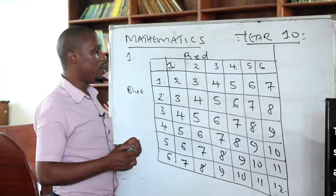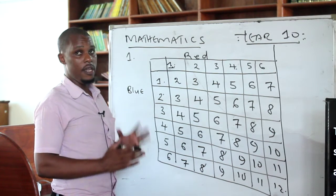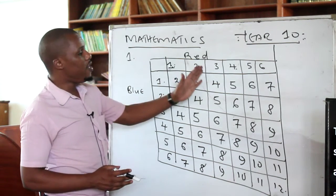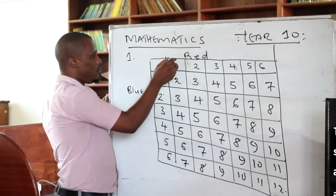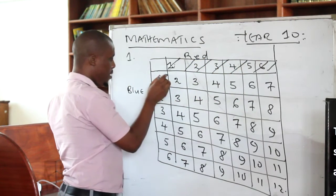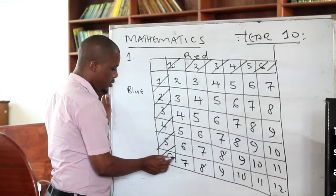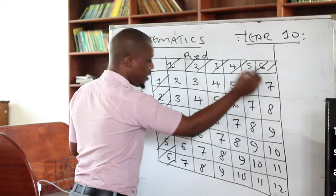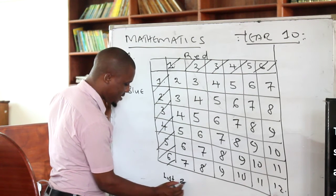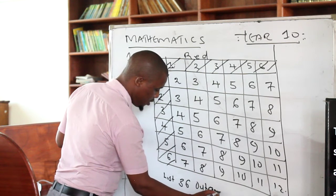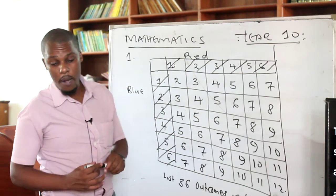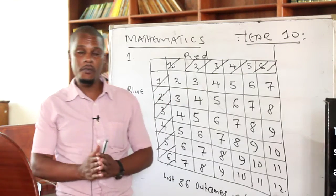That is how we fill the table. You can see that the table is assisting us to be able to come up with a list of all possible outcomes. From this table you can see how many outcomes you are going to have. The outcomes for the red die are 1, 2, 3, 4, 5, 6; and for the blue die also 1, 2, 3, 4, 5, 6. So all possible outcomes are going to be 36 outcomes in total — 36 outcomes. The table is assisting you to come up with a list of all possible outcomes.